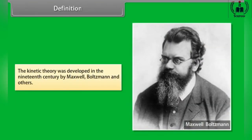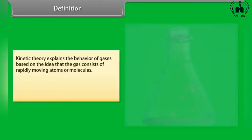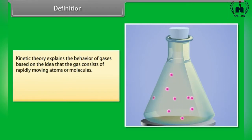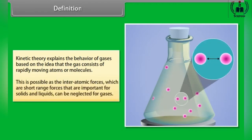Definition. The kinetic theory was developed in the 19th century by Maxwell, Boltzmann and others. Kinetic theory explains the behavior of gases based on the idea that the gas consists of rapidly moving atoms and molecules. This is possible as the inter-atomic forces, which are short-range forces that are important for solids and liquids, can be neglected for gases.